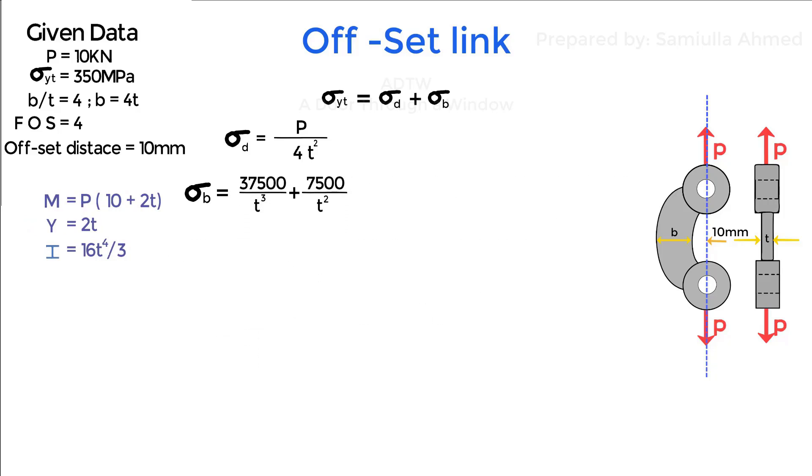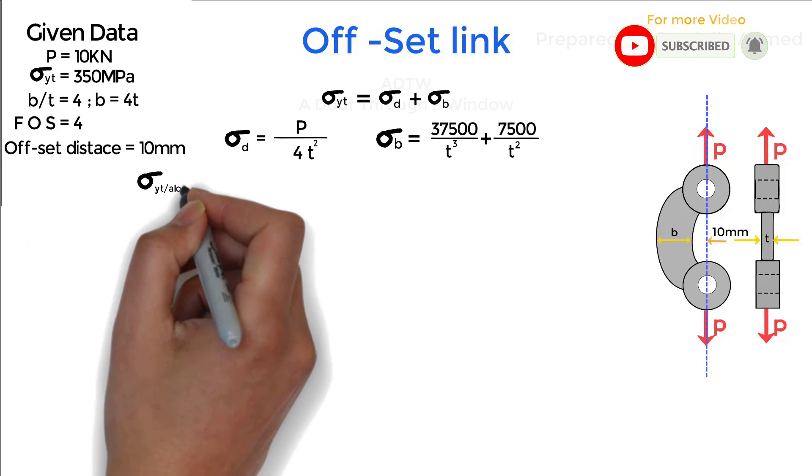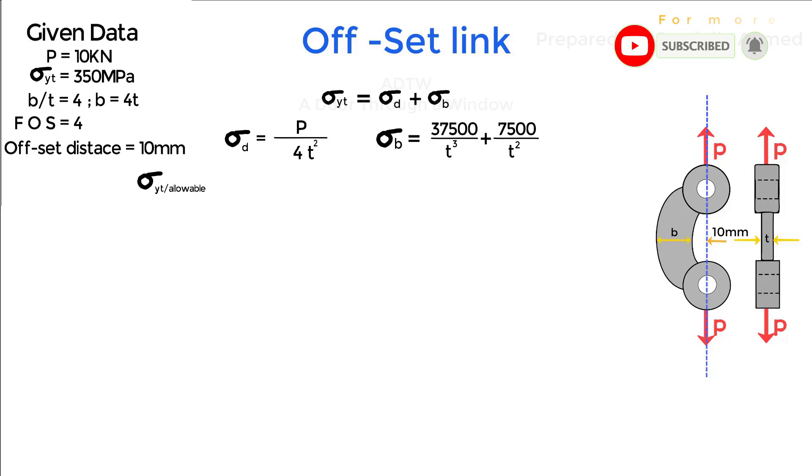Since we found out direct stress and bending stress, now we'll see what is the yield stress or allowable stress for the given offset link.